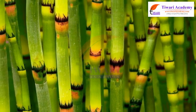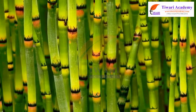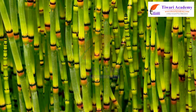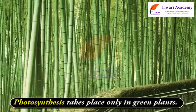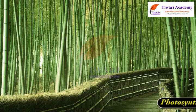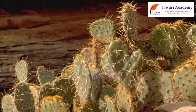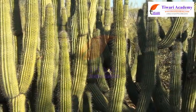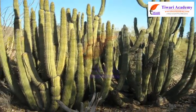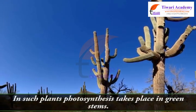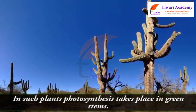Besides leaves, photosynthesis also takes place in other green parts of the plant, such as green stems. Chlorophyll is necessary for photosynthesis, so it takes place only in green plants. The leaves of plants that grow in desert areas are modified into spine-like structures or scales to reduce the loss of water through transpiration. In such plants, photosynthesis takes place in the green stems.